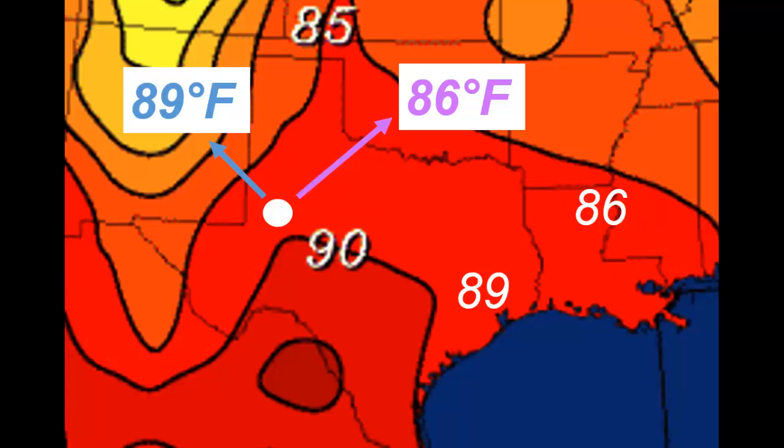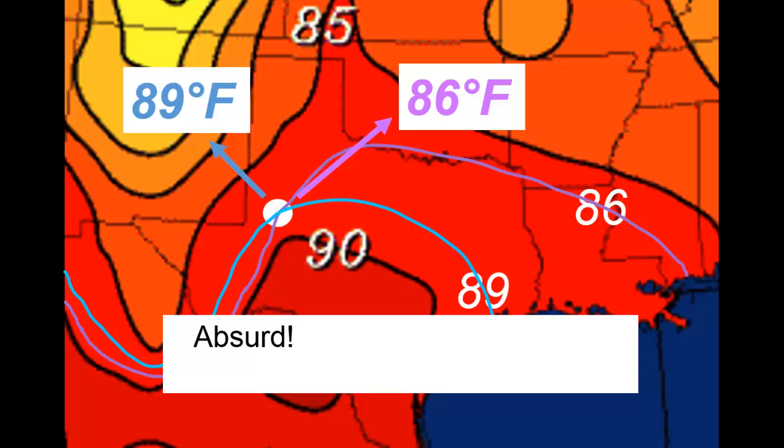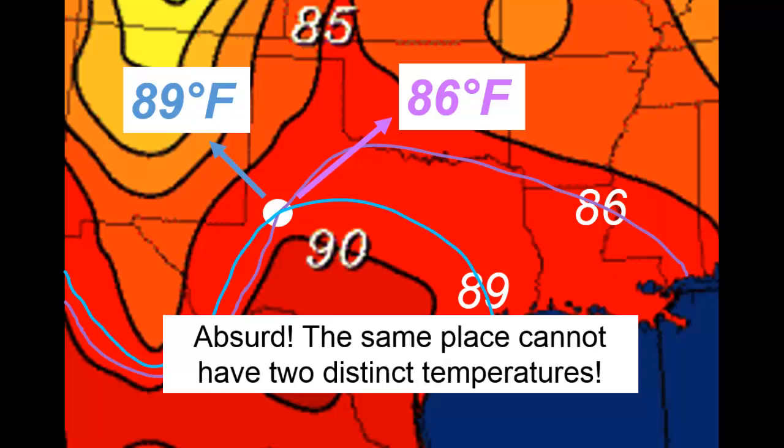All together, we conclude the same place has a temperature of 89 degrees and also a temperature of 86 degrees. But this is plainly absurd. The same location cannot have two different temperatures at the same time.